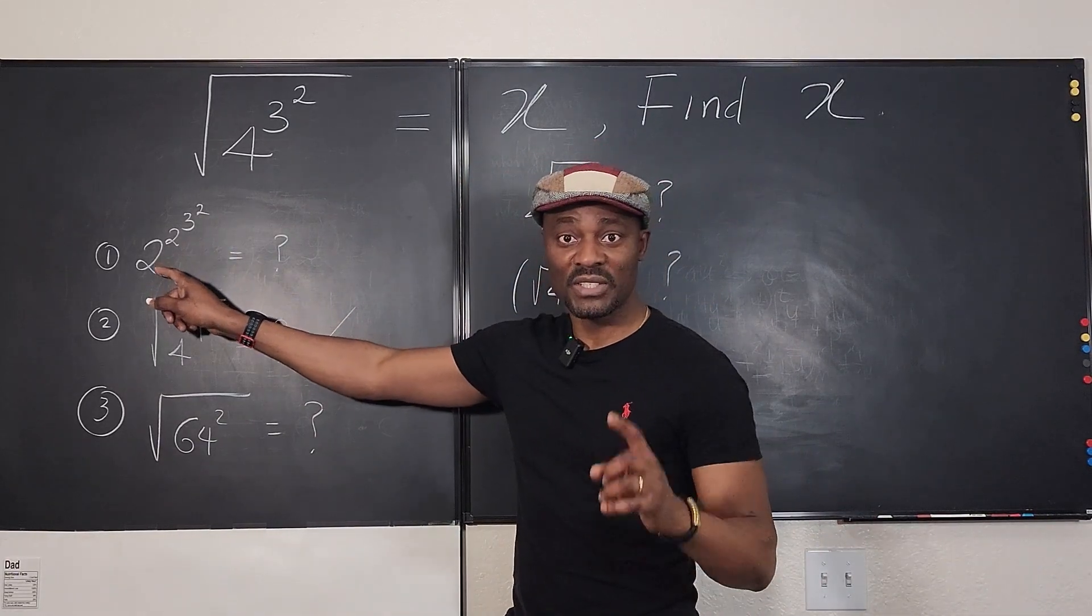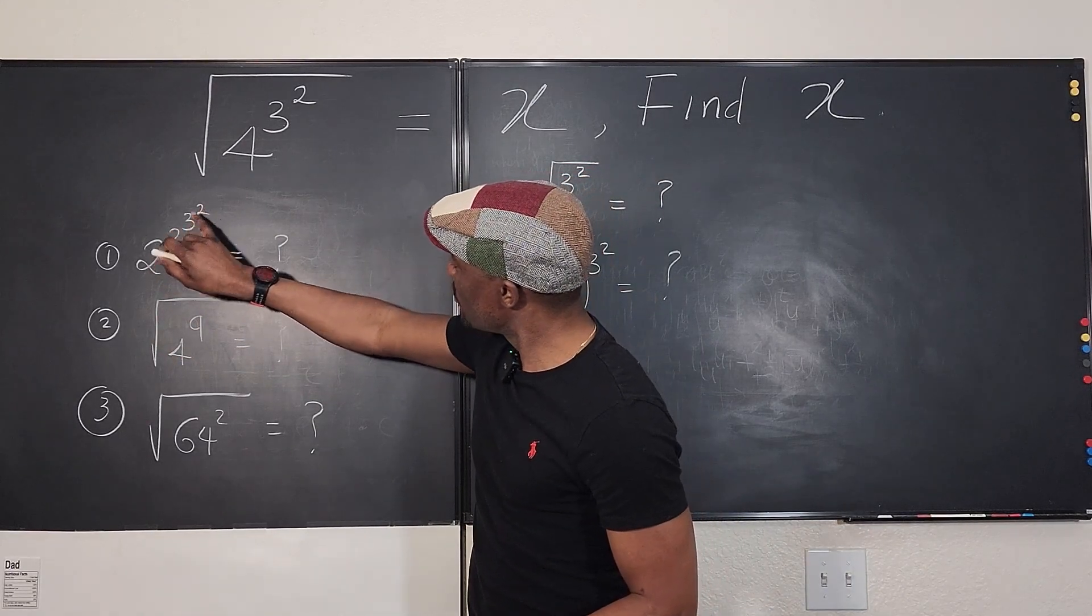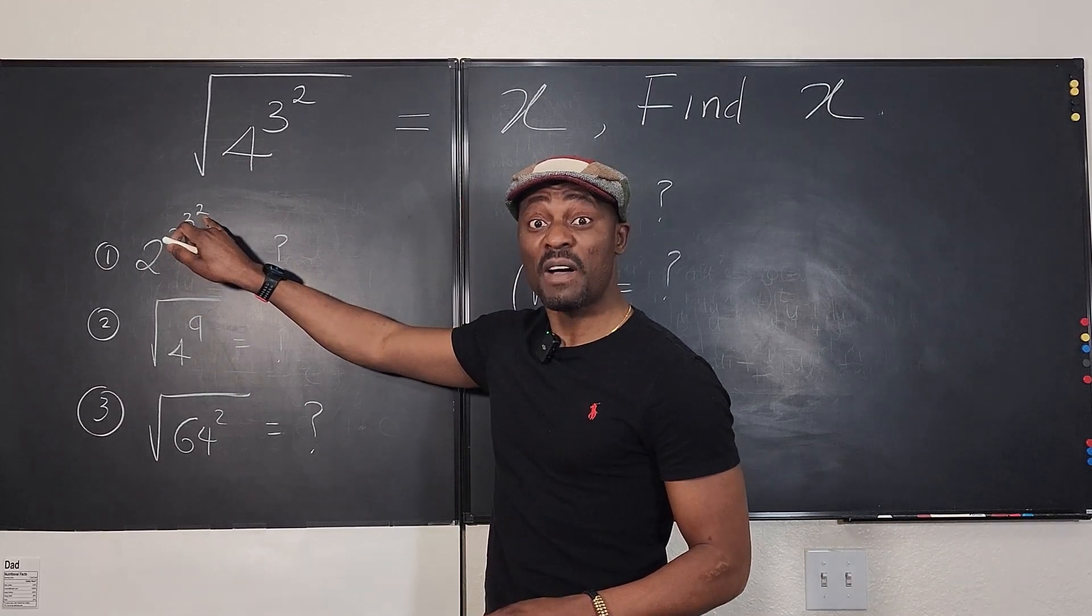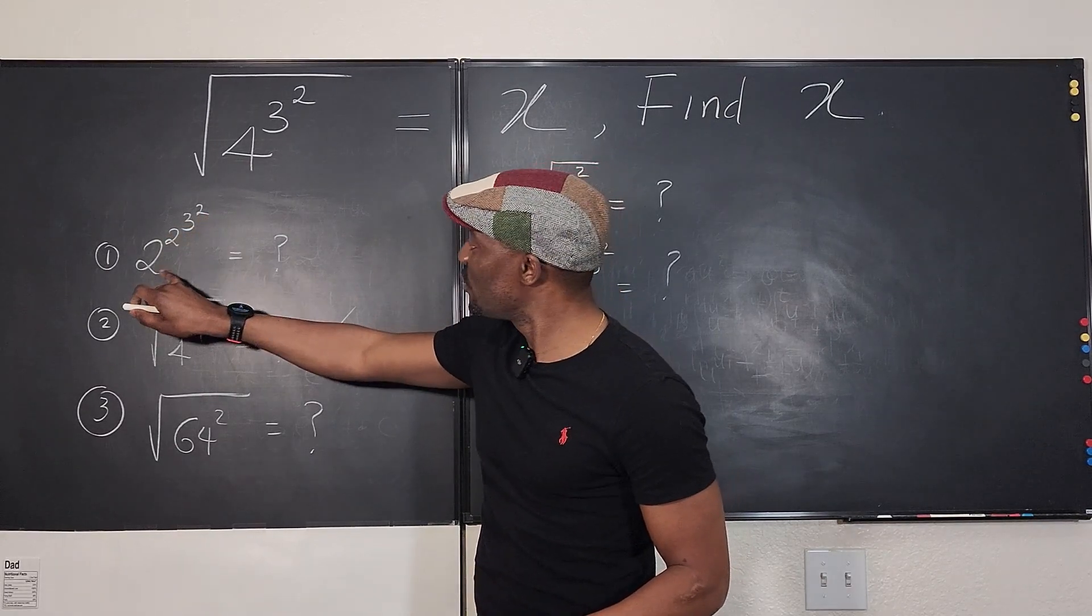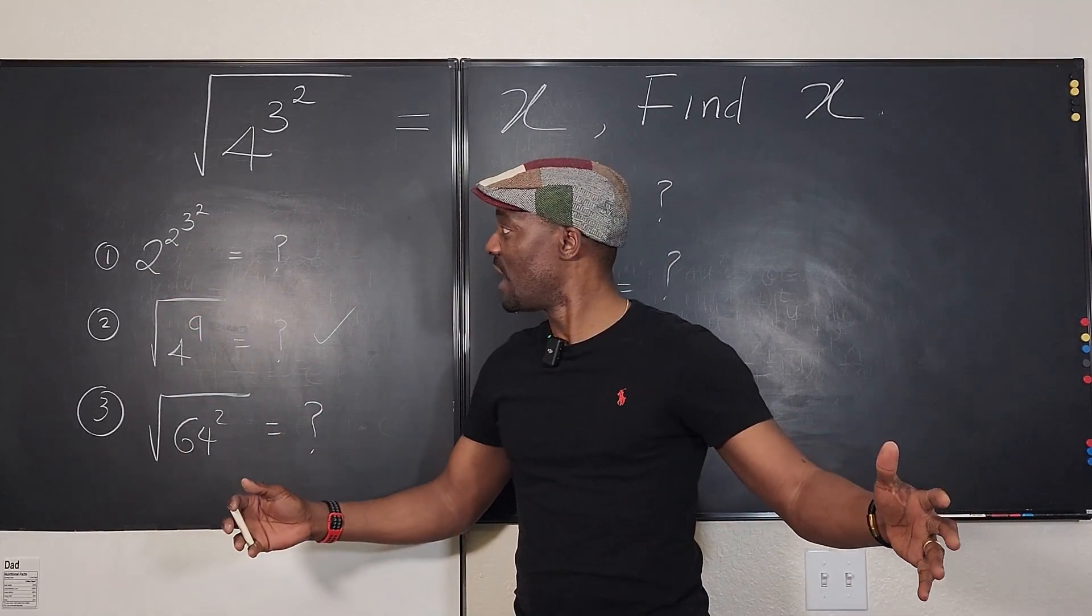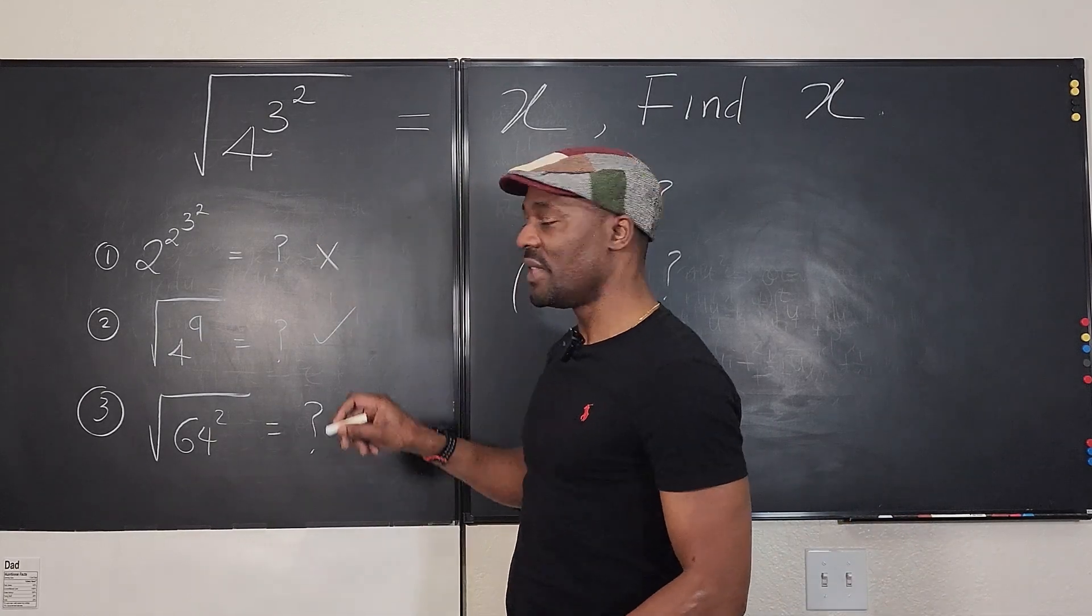This is not correct, because this would be the same thing as 9, 2 raised to power 9. Whoa, that's a huge number. That's 512. And then this is 2 raised to power 512, which means 2 times 2 times, so you do it 512 times. No, that's not what this is.